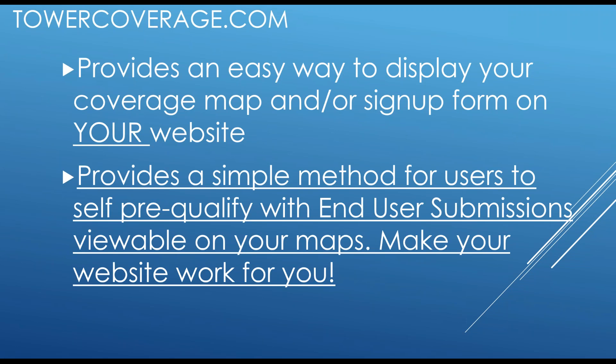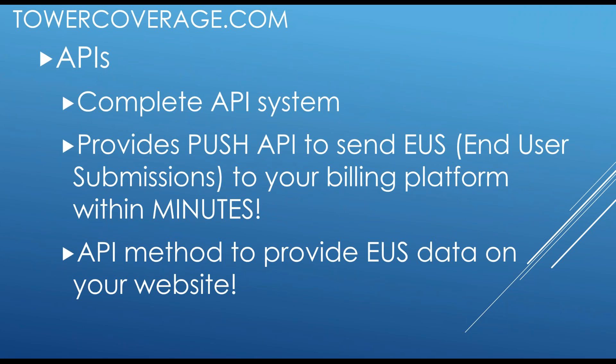We have website integration which provides an easy way to display your coverage map or a signup form on your website. It also provides a simple method for users to self pre-qualify, with end-user submissions viewable on your maps. That allows your website to work for you. TowerCoverage.com also has a complete API system — you don't even need to log into our system to use our APIs — and we have an API push on our end-user submissions. Within five minutes of a customer submitting information on your website, you'll get that information pushed to your CRM or billing system.